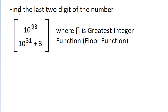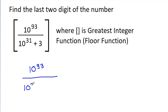In this video, we have to find the last two digits of the greatest integer function (floor function) of 10 to the power 93 divided by (10 to the power 31 plus 3). So we have ⌊10⁹³ / (10³¹ + 3)⌋ and we have to find the last two digits.